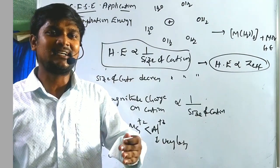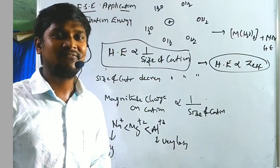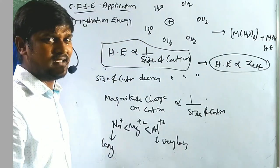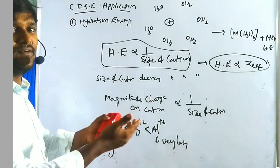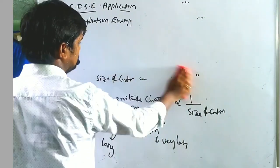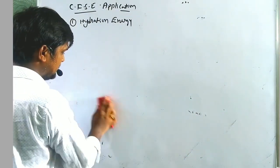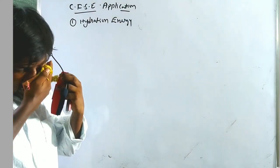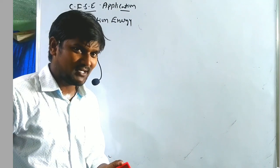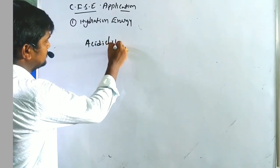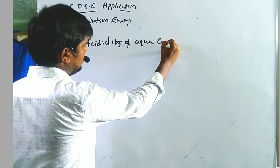Across the period left to right, atomic radii decrease and effective nuclear charge increases. Now let us go with our d-block complexes — transition metal complexes.